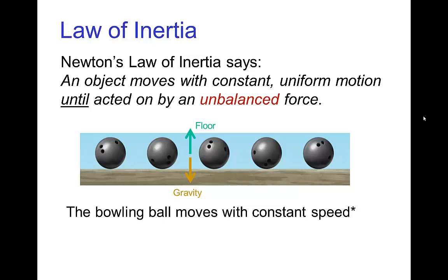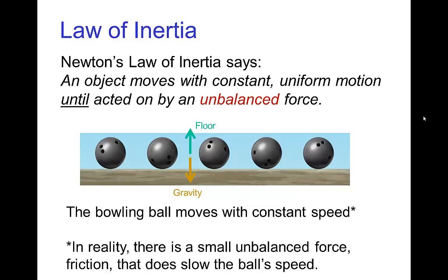This tells us that the bowling ball rolling along the floor has the upward force of the floor balancing the downward pull of gravity, so there's no unbalanced force, and the bowling ball should move with a constant speed. Of course, in reality there's a small unbalanced force — namely friction — and so the ball doesn't roll forever with constant uniform motion. It will slow a little bit due to friction, but aside from that asterisk, we have constant uniform motion.